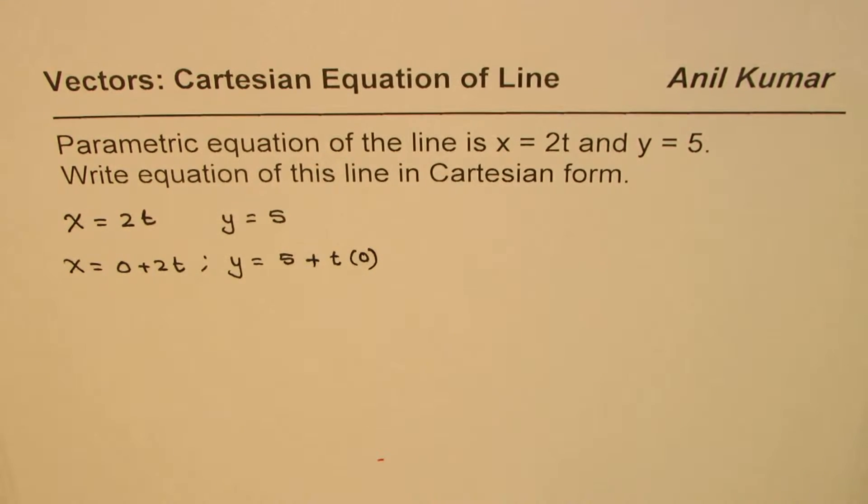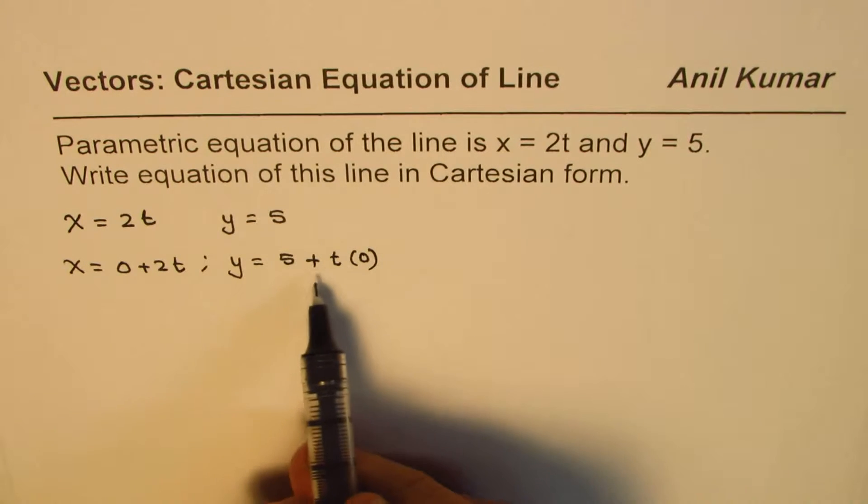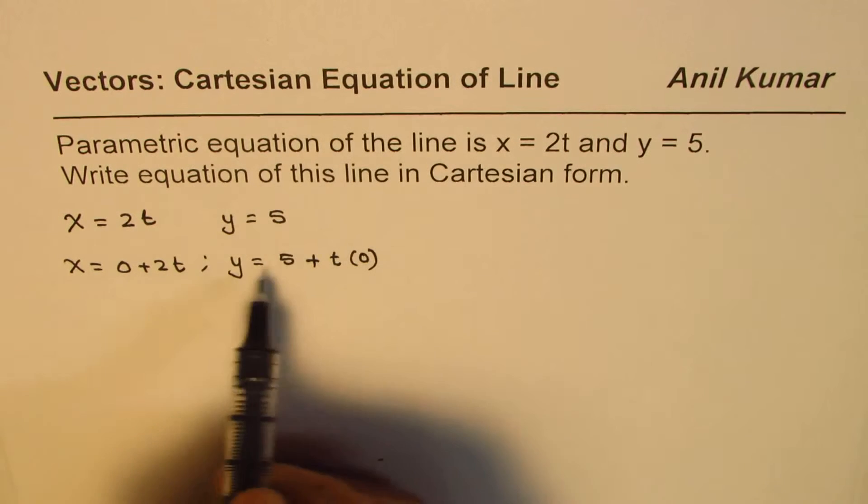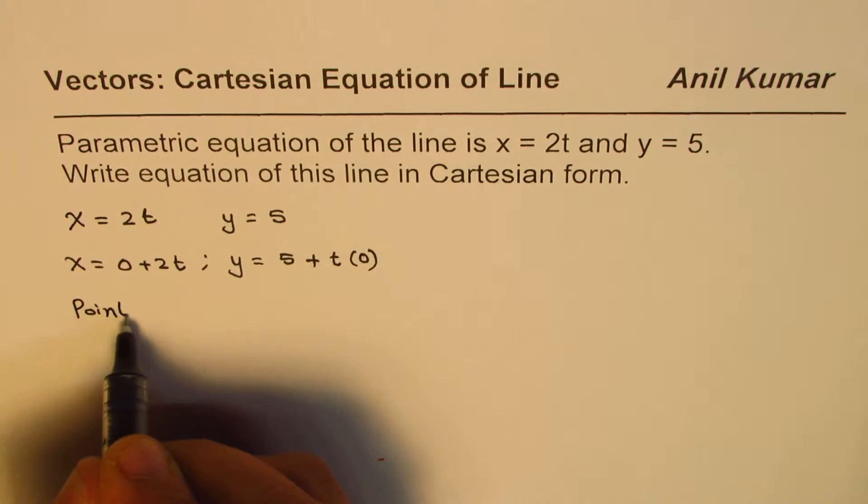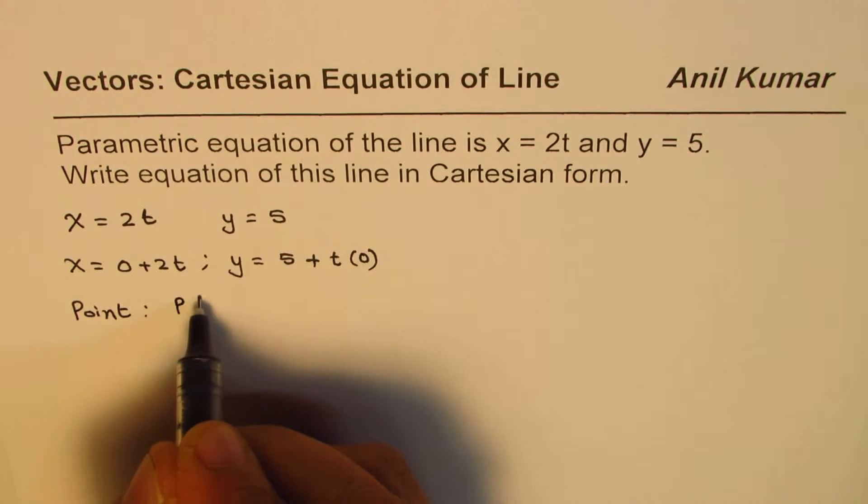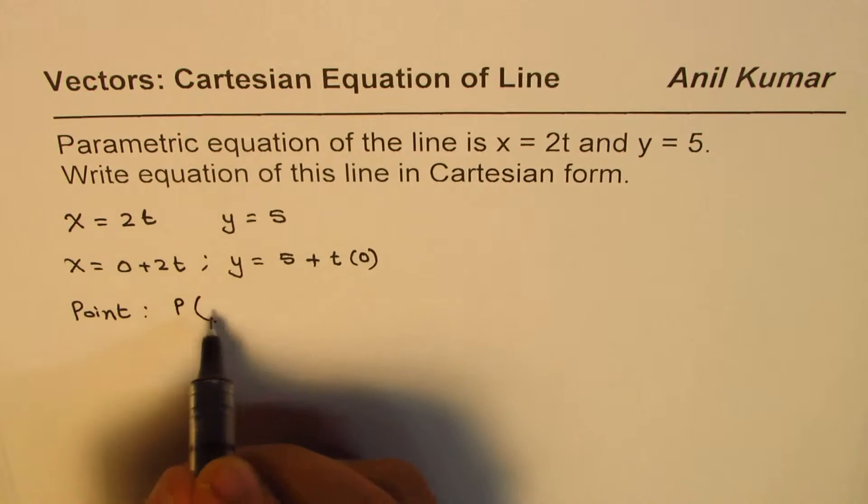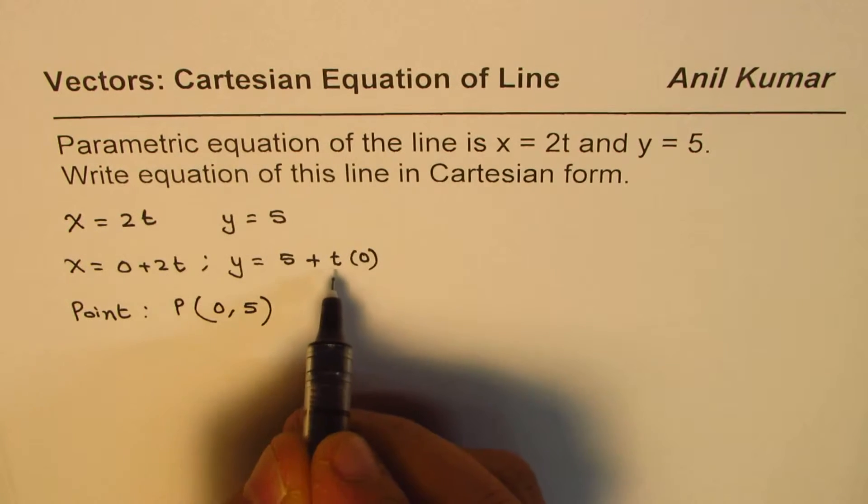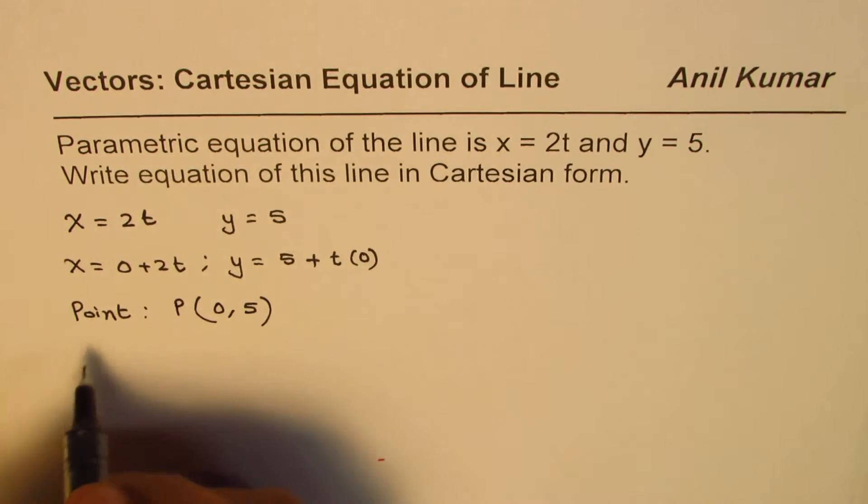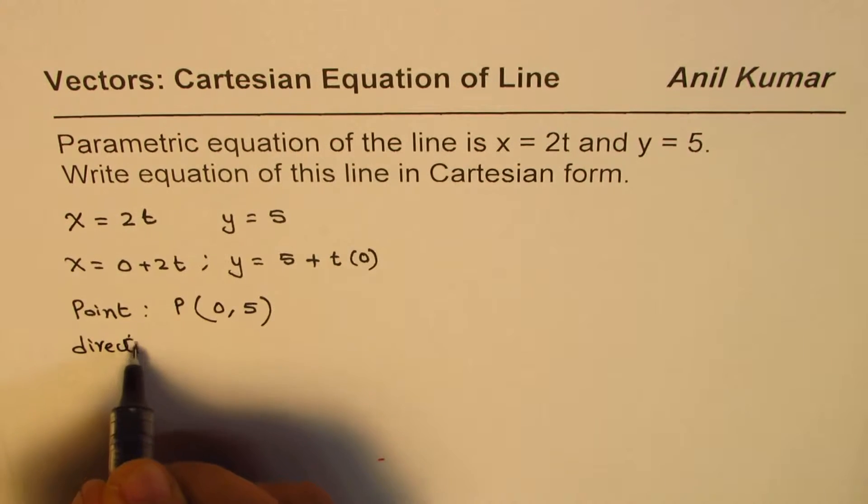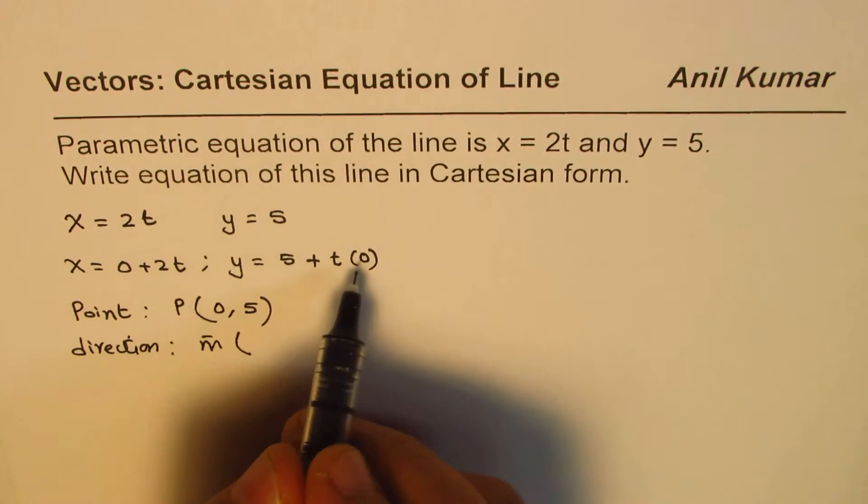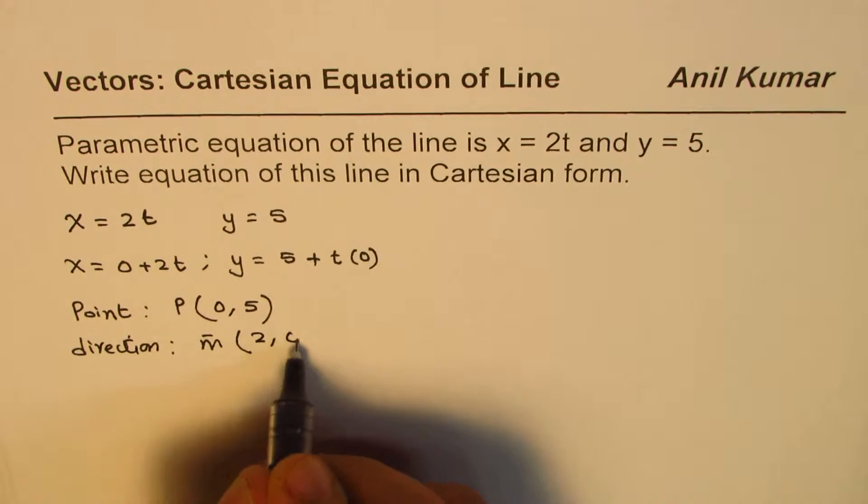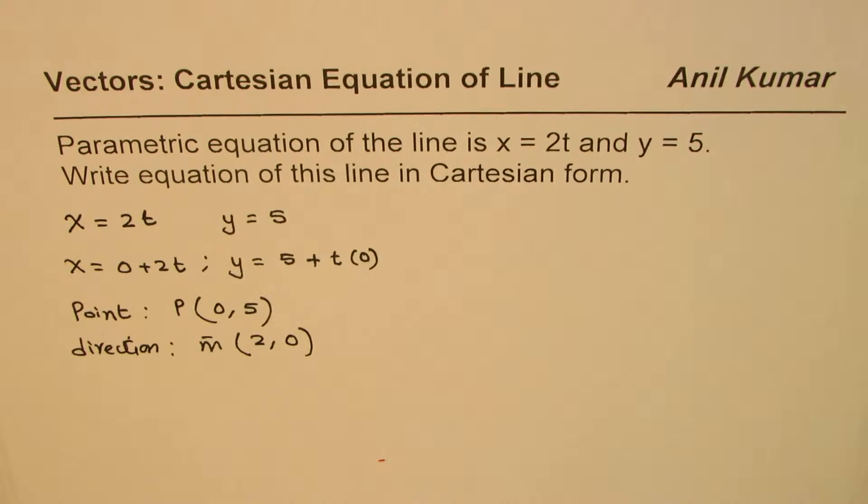The idea of writing it like this is that it gives us clearly two things. One, it gives us a point—we can call that point P which will be (0, 5). It also gives us the direction vector, which we could write as (2, 0). That becomes the direction vector.